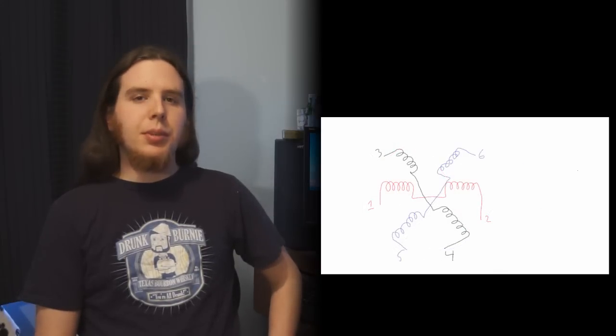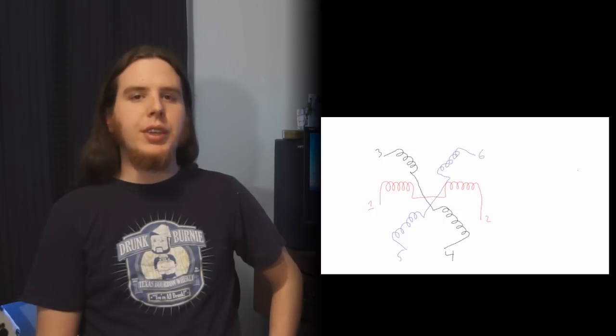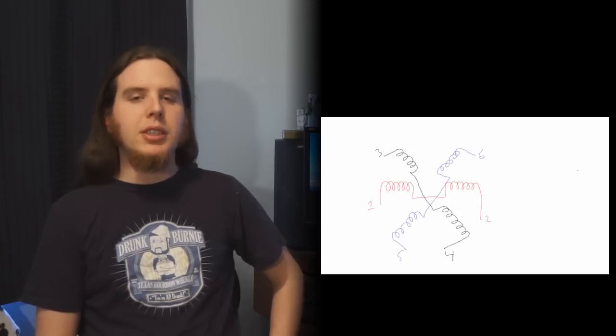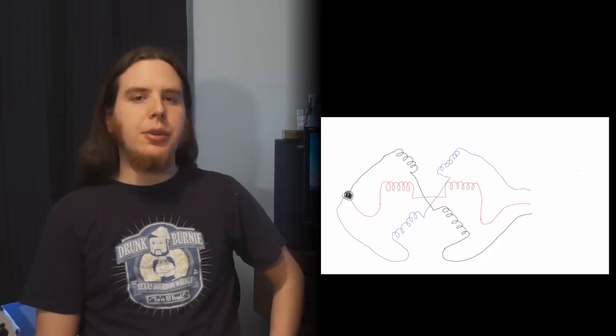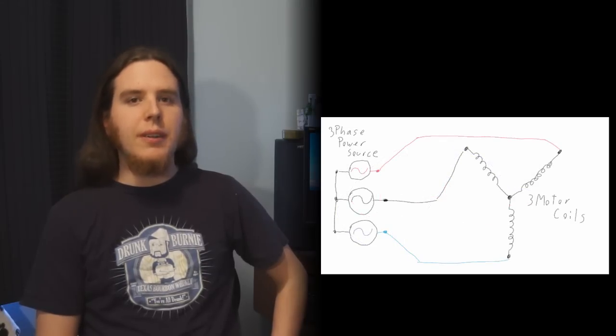It's possible to simplify this six-wire three-phase system even further by tying three of those wires together. If you pick any three wires and tie them together, you end up with a neutral point. As long as the load on your three-phase system is symmetrical, you can tie three wires of your load together as well. This is how most three-phase loads work.